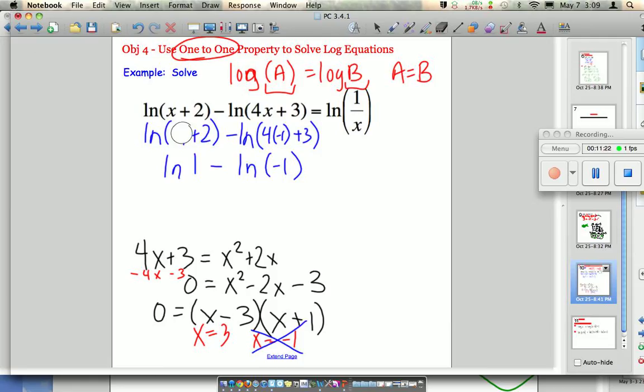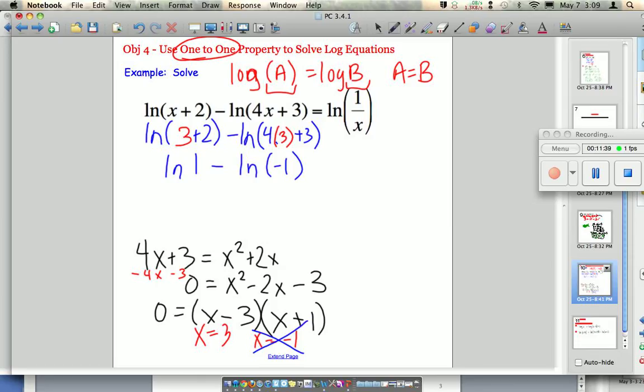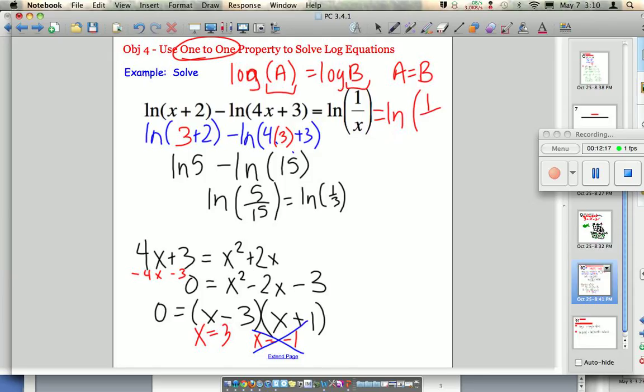So let's try the other one. I'm going to plug in my other answer, which was 3. So 3 plus 2, 4 times 3. Let's see what I get. I'm going to get natural log of 5 minus the natural log of 12 plus 3 is 15. That's just the natural log of 5 over 15, which is the natural log of 1/3rd. That's as simple as I can get on the left. On the right, it's just natural log of 1 over 3. Notice that they are equal. So my only solution is x equals 3.